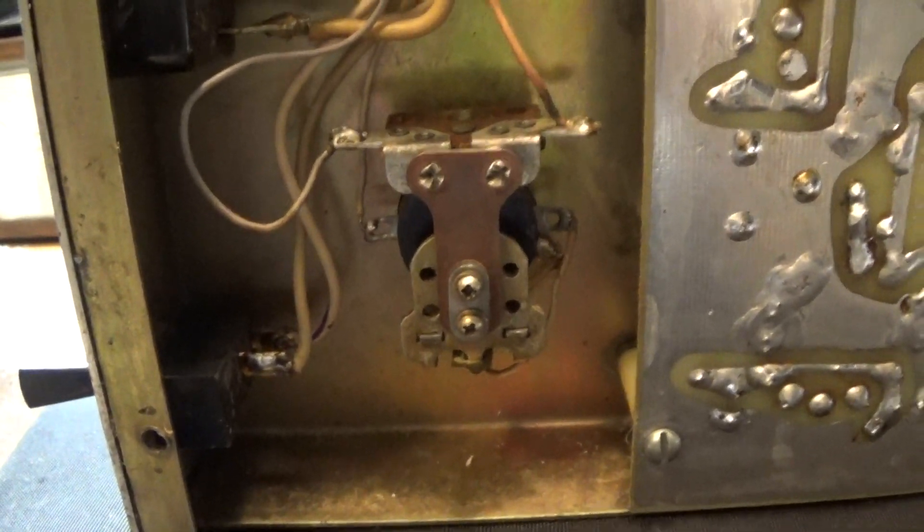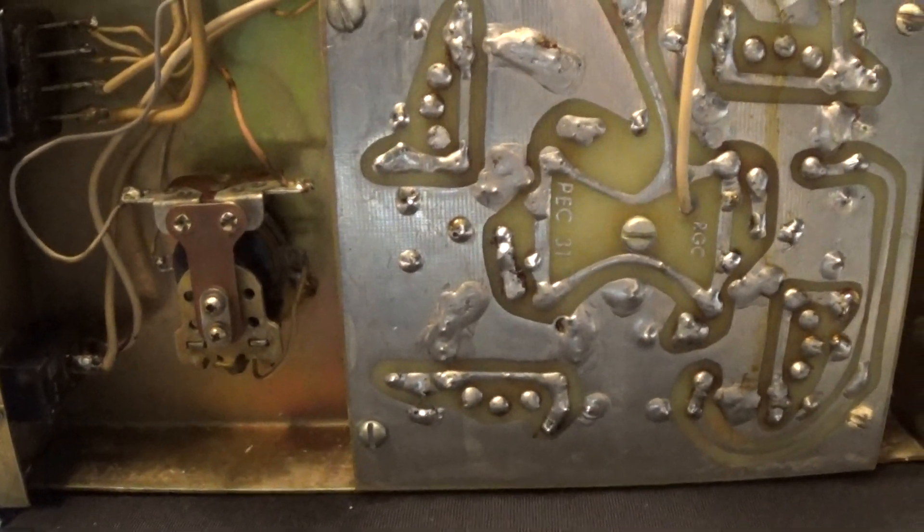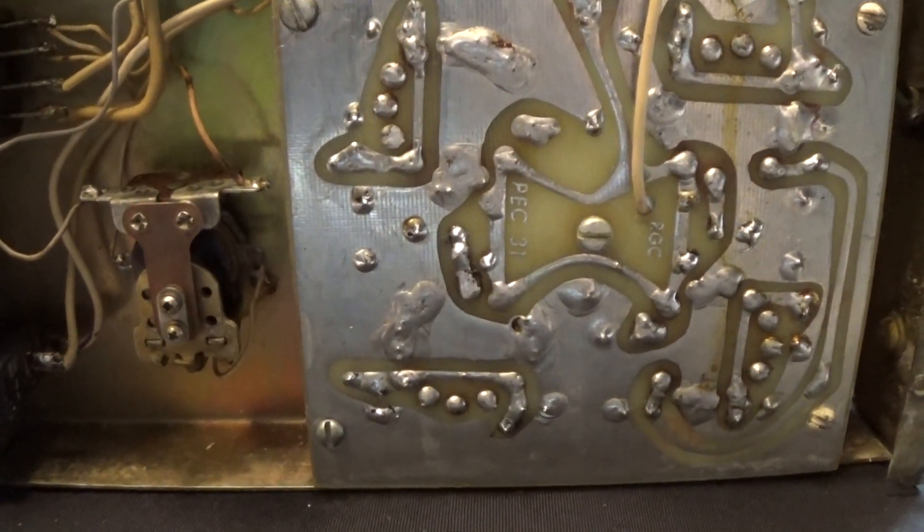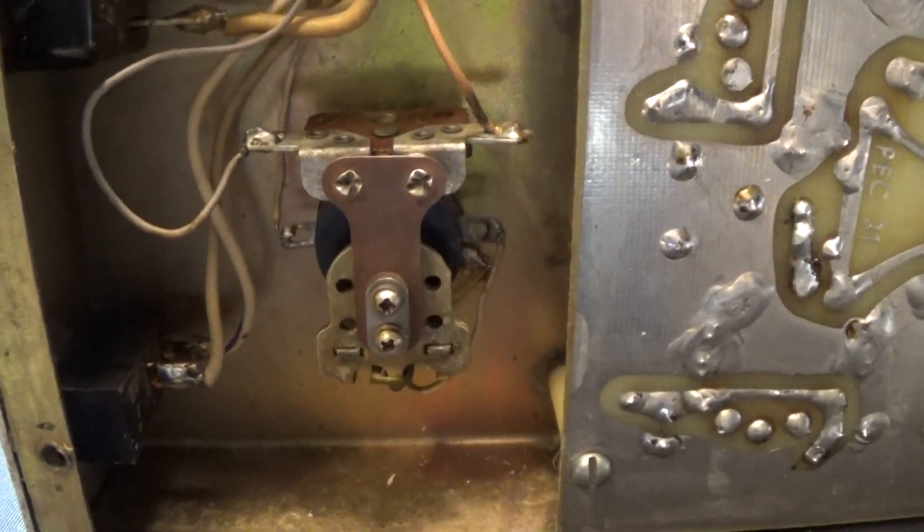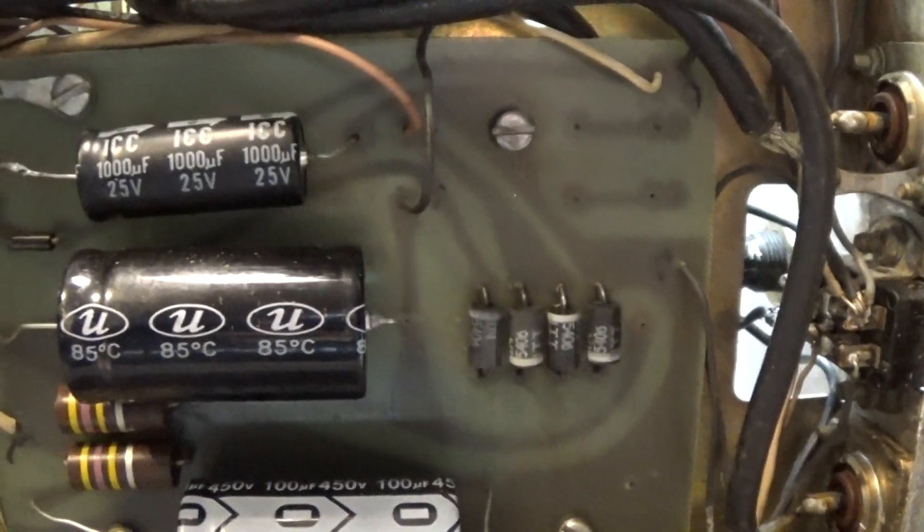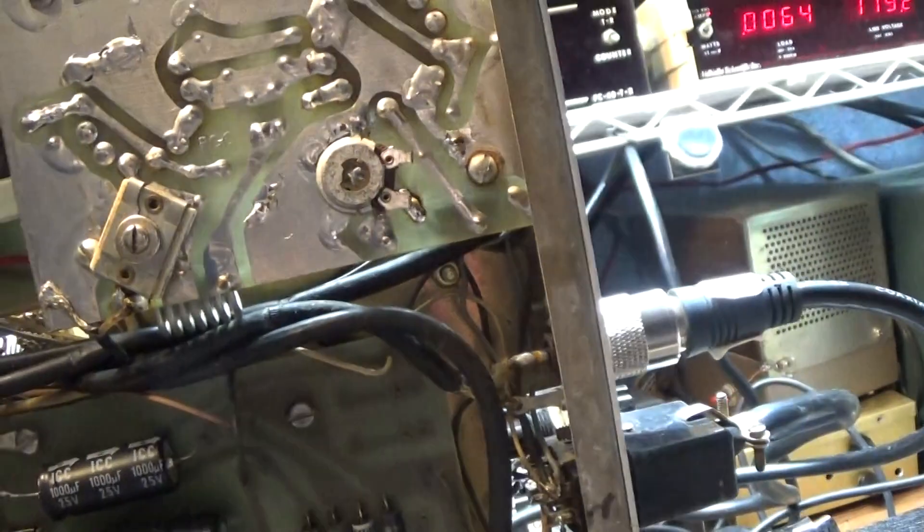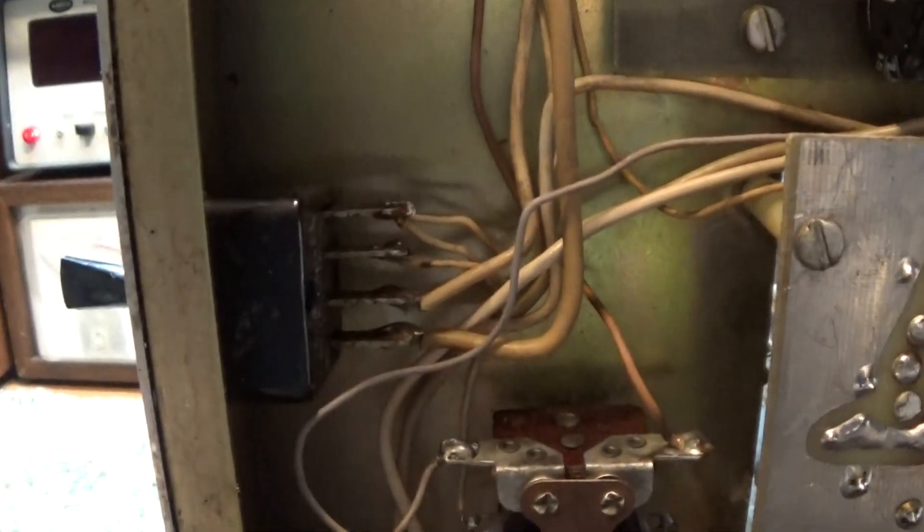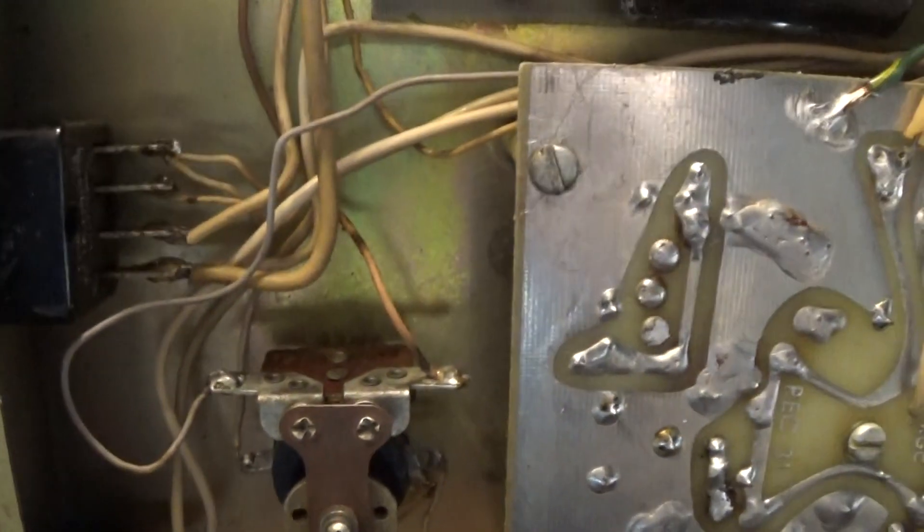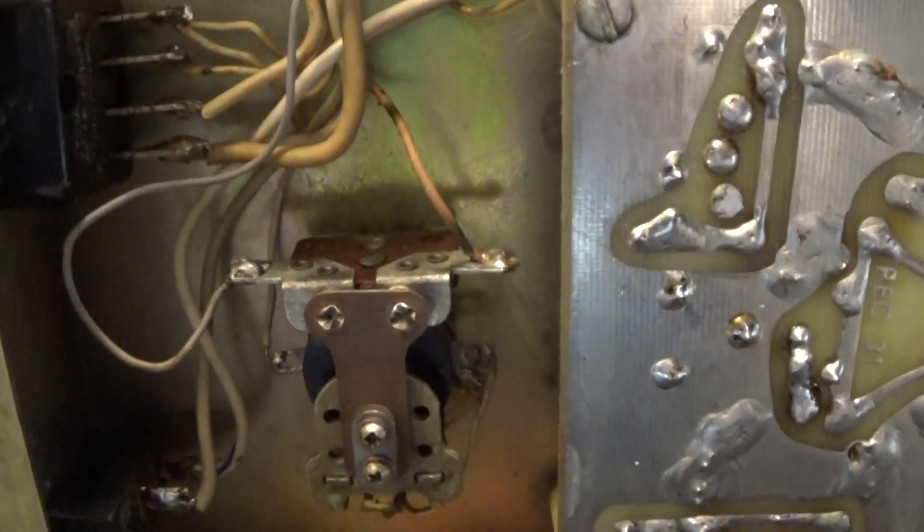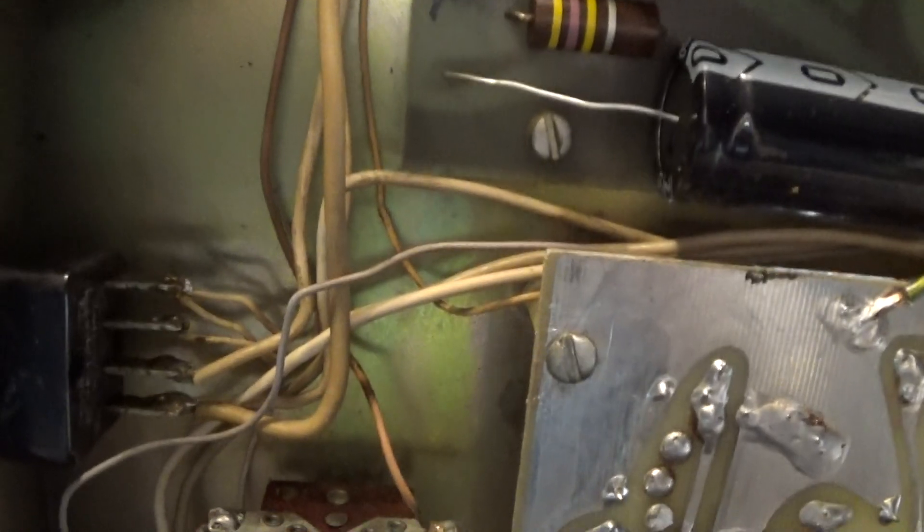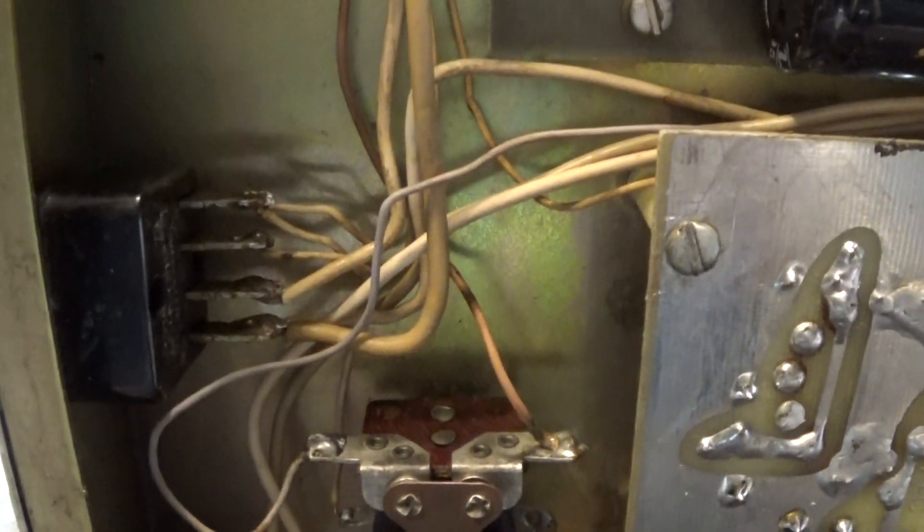This one has the high voltage relay that only fires up the high voltage when the amp is keyed up. Otherwise, the high voltage is not applied to the high voltage board. It comes out of the transformer and one of the legs goes to that relay first, then into the high voltage board. This one also has the standby switch, so the high voltage is also not applied when the standby switch is on standby.